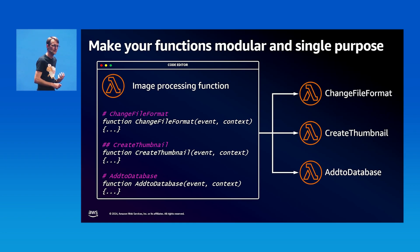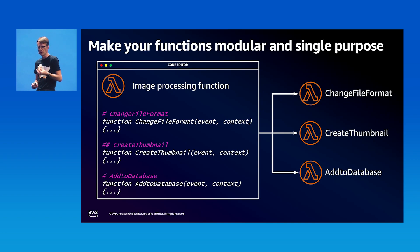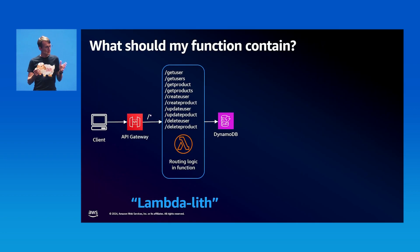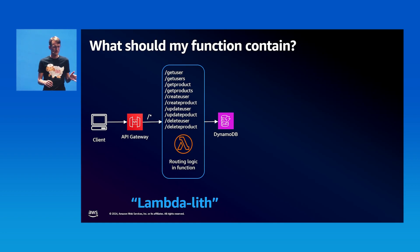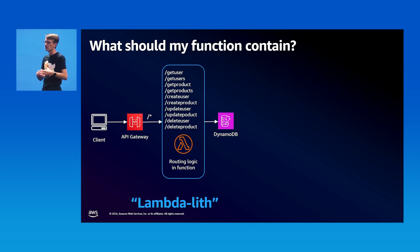For example, an image processing function that changes the file format, creates a thumbnail, and adds it to a database. When we split this into individual functions, it improves performance because we only load the code needed for that specific task. It also improves security as you can scope down the IAM policies of each function to only what it needs. Operationally, it's convenient to have an API Gateway that catches any request and forwards it to a Lambda function, and in code you decide based on URL, method, and parameters what to do. But from a security and performance perspective, applying all resources and permissions at one big function level is probably not the best approach.